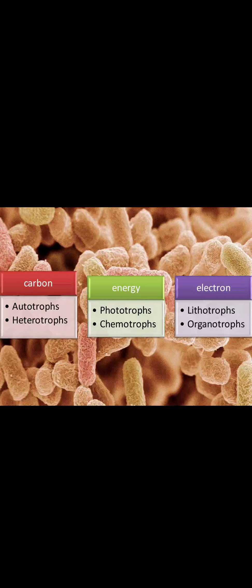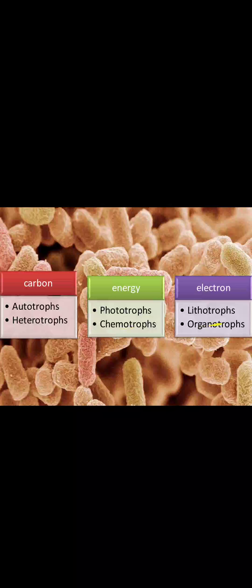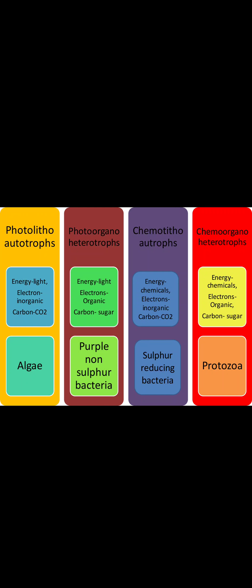The next classification is chemo-organo-heterotrophs. These organisms use chemicals as their source of energy, organic substances as their source of electrons, and sugar as their source of carbon. They can also be called chemo-heterotrophs. An example is protozoa. These are the four types of classifications of organisms based on nutritional requirements.